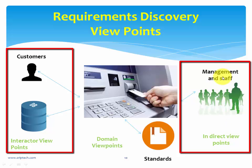Indirect viewpoints are those who do not directly interact with the ATM but influence certain system requirements — for example, bank management and staff. A security-related example: if you are in an ATM and feel threatened by a stranger, there are panic buttons in the ATM. The moment you press that button, it directly calls and informs the police. That is an indirect viewpoint — management and staff have certain influence on the system.